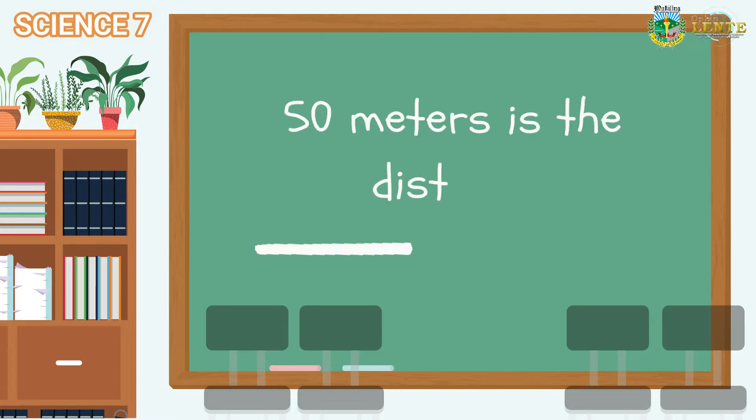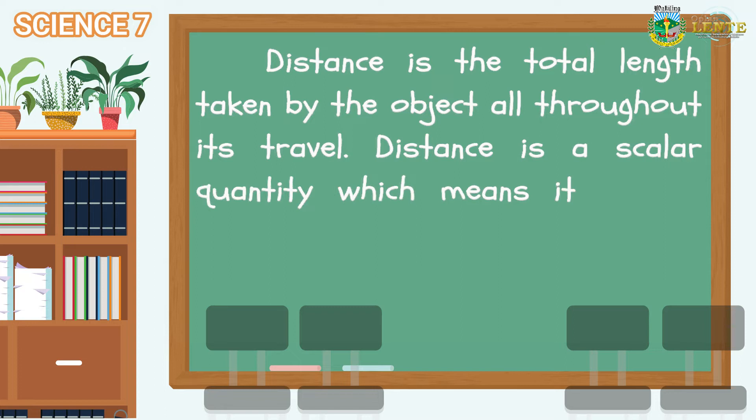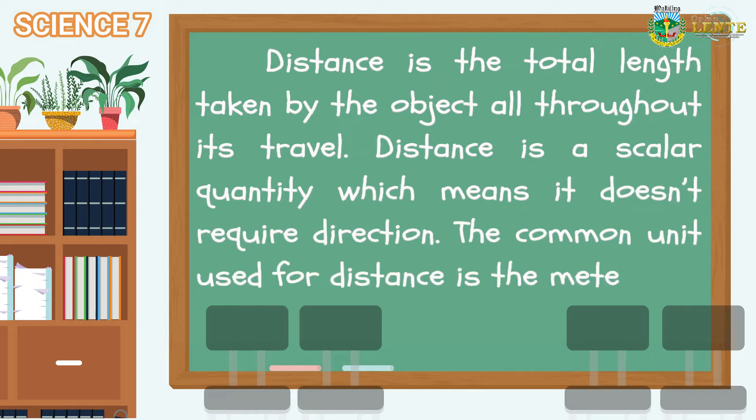The total path taken by the dog is called distance. Distance is the total length taken by the object all throughout its travel. Distance is a scalar quantity which means it doesn't require direction. The common unit used for distance is the meter.